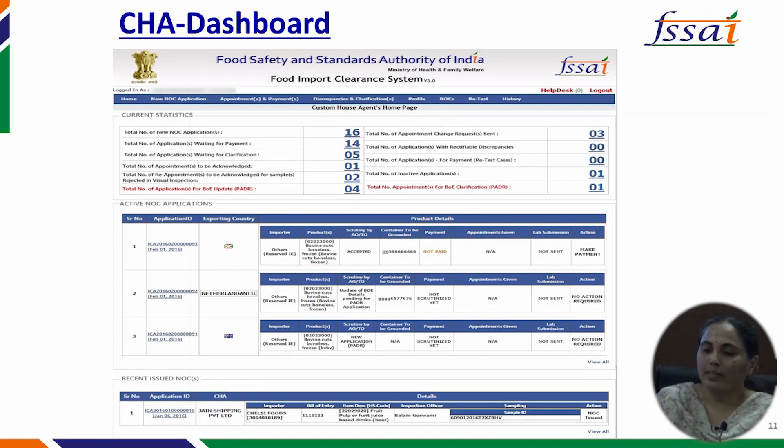This is a screenshot showing the lab parameter entry page. For each parameter tested, the lab records: the FSS specification, the method used, the test result obtained, and the opinion on whether the parameter conforms to the specification. Once all parameters are entered and the final opinion is submitted, the lab generates a report of all parameters — the online lab report in Form 2. The soft copy of this report is also uploaded by the lab in the online FICS.